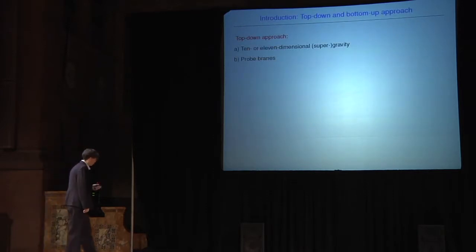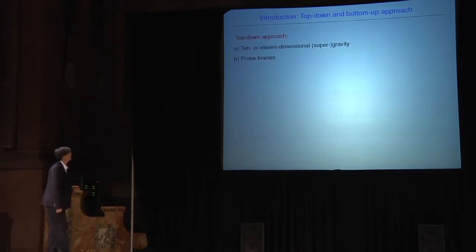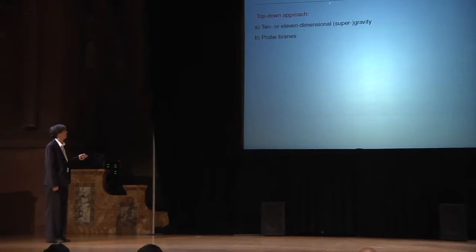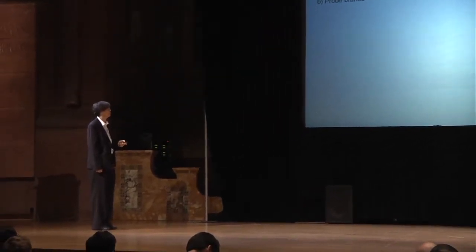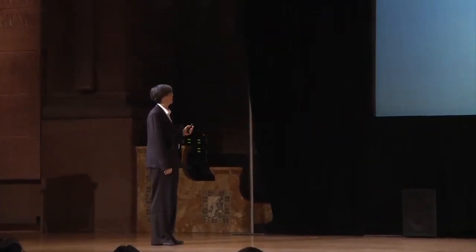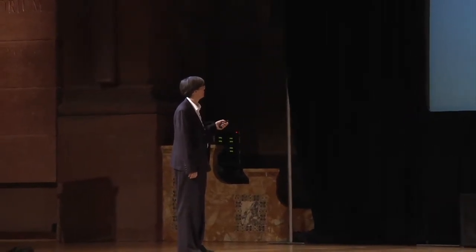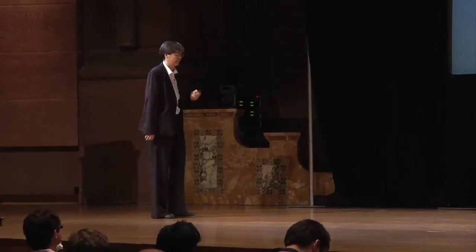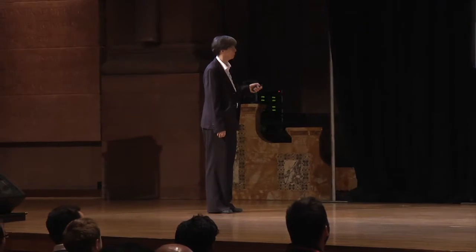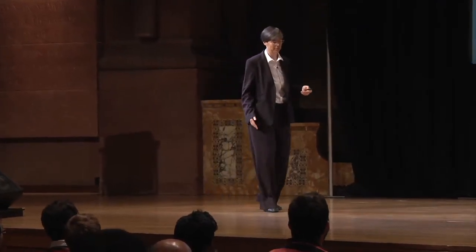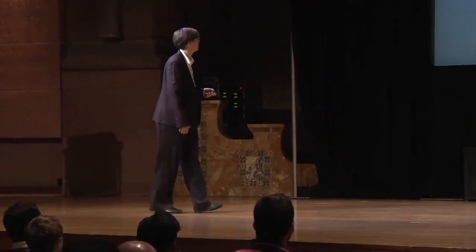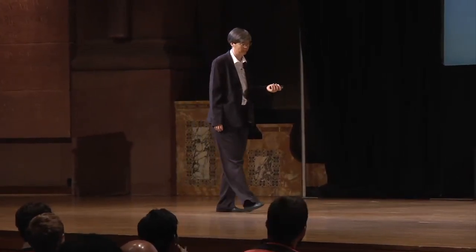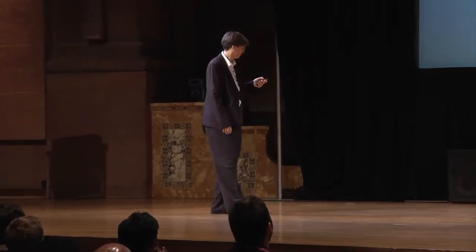There are different approaches in this field which come under the name of top-down and bottom-up approaches. The top-down approach means starting from some action in 10 or 11 dimensional gravity or supergravity. A further very interesting and useful top-down approach is the study of probe branes, where you embed a probe brane into a particular background geometry in 10 or 11 dimensions — very useful for introducing fundamental degrees of freedom like electrons or quarks.